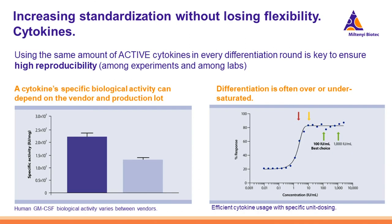How can we be sure to use always the same amount of active cytokine in every differentiation round? We should always assess biological activity so that it remains constant among experiments. Cytokine-specific biological activity can depend on the vendor and the production lot, and this variation can lead to differentiation where the culture is either over- or under-saturated. A good researcher should assess cytokine activity each time, or use cytokines where activity values have already been measured — for example, with the MACS premium-grade cytokines.